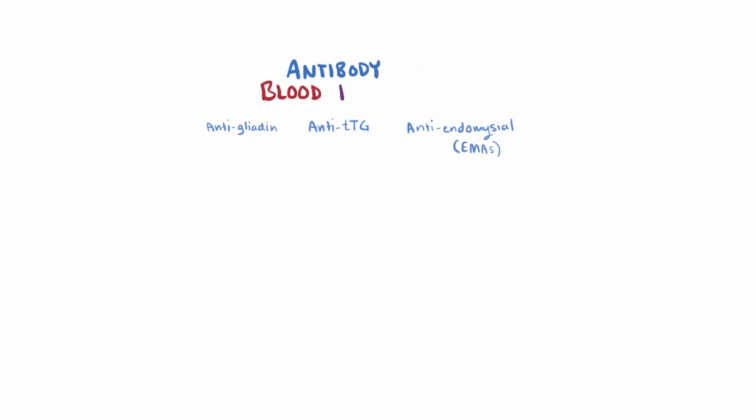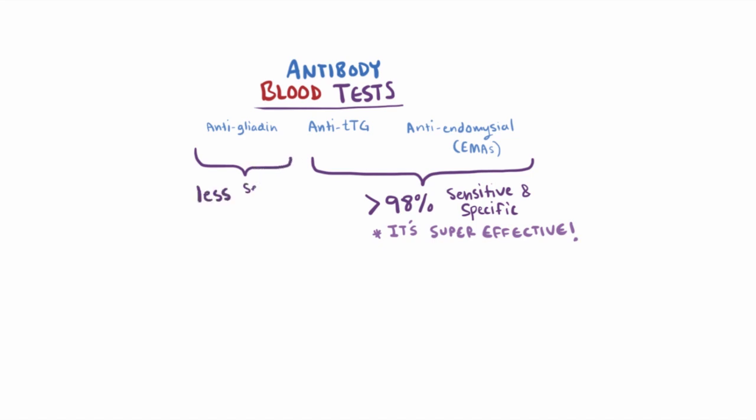Tests for antibodies in the blood are used clinically to screen for celiac disease. IgA blood tests for both TTG and endomysial TTG are more than 98% sensitive and specific, and are super effective screening tests. Tests for IgA or even IgG antibodies against gliadin are less sensitive and specific, but are still pretty effective tests to screen for the disease.